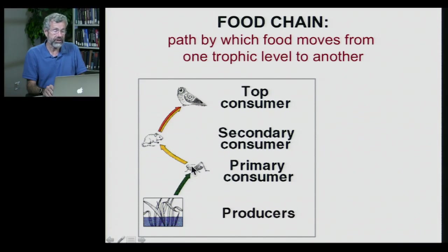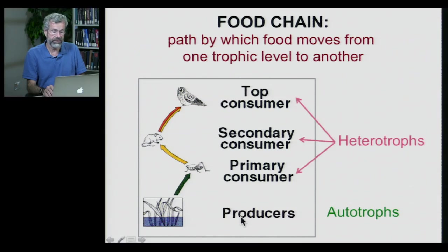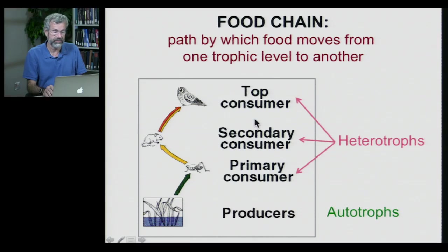The grasshoppers may be eaten by insectivores, and the insectivores may then be eaten by top predators. So in this simple chain, we've got four links: our autotrophs at the bottom — the producers — and all the others are heterotrophs, going from primary, secondary, to top consumers.